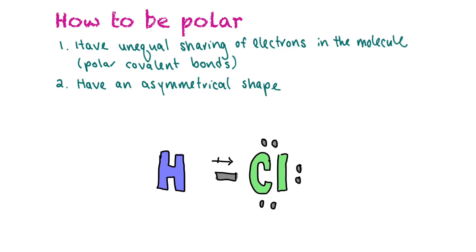So how to be polar? You have to have unequal sharing of electrons in the molecule. So you have to have what are called polar covalent bonds. And then you also have to have an asymmetrical shape. So it can't be the same on both sides or be able to almost fold, so to speak. So if we look at this molecule right here of hydrogen chloride,